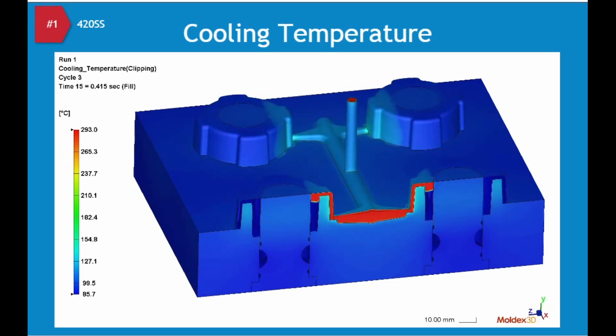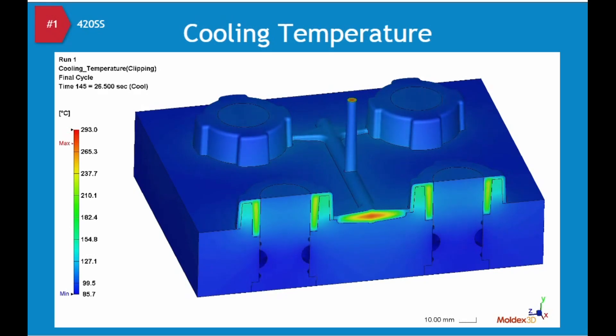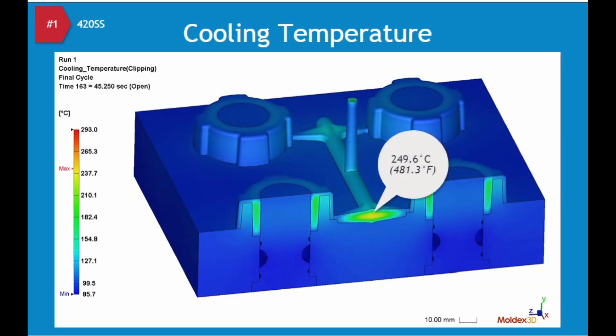At the end of the cooling phase, some areas inside the runner system are above the material freeze temperature of 220 degrees Celsius. The maximum temperature reached is 249.6 degrees Celsius.